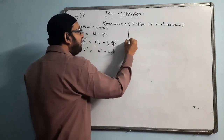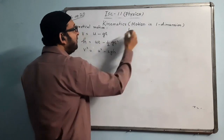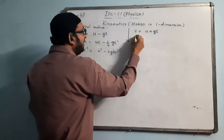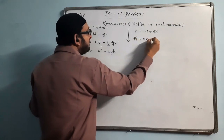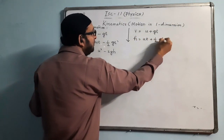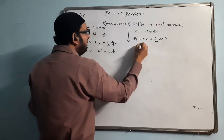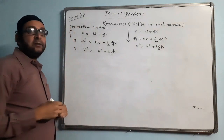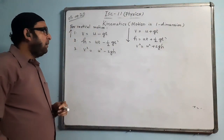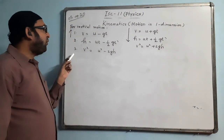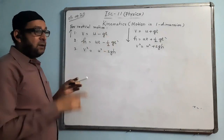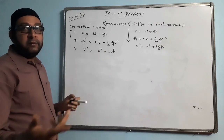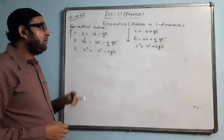For vertically downward motion, only the sign changes: v = u + gt, x = ut + ½gt², and v² = u² + 2gh. Formula 4 (s = vt) does not apply for vertical motion because acceleration is never zero — the value of g cannot be zero.